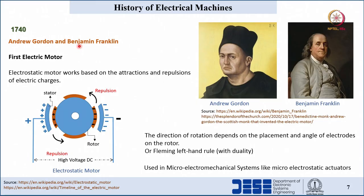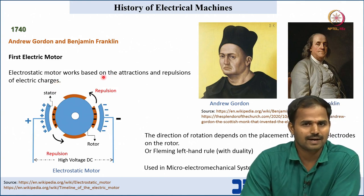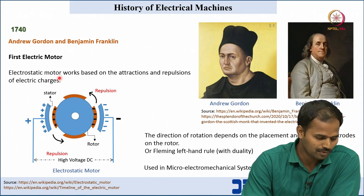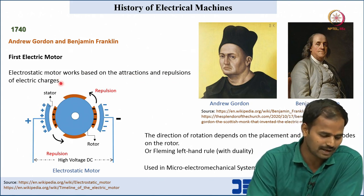The first electric motor was invented by Andrew Gordon and Benjamin Franklin in 1740. This motor works on the principles of attractions and repulsions of electric charges. The conventional magnetic machines work on attractions and repulsions of magnets, whereas the electrostatic motor works on the attractions and repulsions of electric charges.